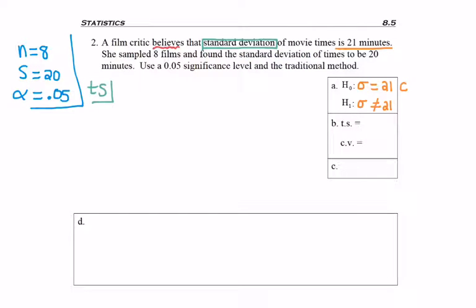Next I want to find my test statistic. So using the formula chi-squared equals, I've got 8 minus 1 times 20-squared quantity divided by 21-squared. On the calculator I get 6.34920.